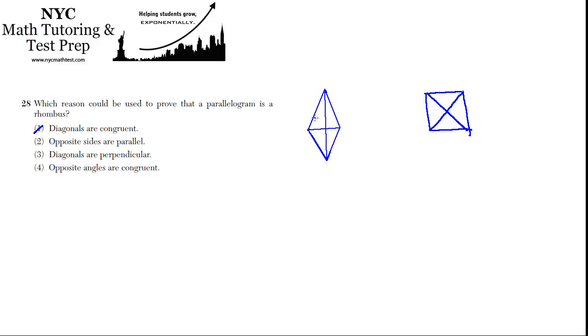Opposite sides are parallel — well, any parallelogram is going to have opposite sides that are parallel. That doesn't make it a rhombus, so that won't do.